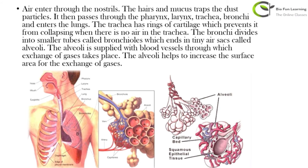Outside the alveoli, capillaries and blood vessels are present. Inside the blood are RBCs (red blood cells), which contain the respiratory pigment hemoglobin. Hemoglobin has a very high affinity for oxygen, so the oxygen coming into the alveoli is absorbed by hemoglobin and transported throughout the body. Oxygen is very less soluble in water and carbon dioxide is more soluble in water, so CO2 dissolves in blood and is transported, while oxygen binds with hemoglobin for transport.